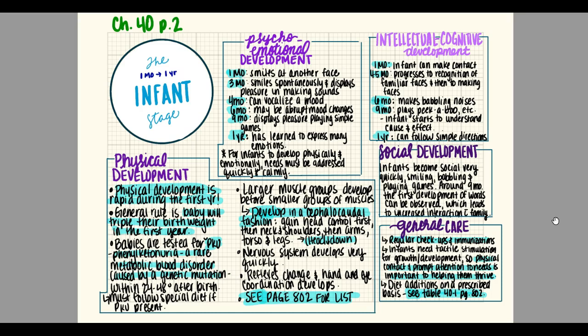The next phase is the infant stage, from one month up to one year — so this stage lasts 11 months. For this stage we add a psycho-emotional developmental factor. Babies at about one month old start to smile at another face. At about three months they smile spontaneously and display pleasure in making sounds — they start to coo and smile. At four months they can vocalize a mood. At six months they may start to exhibit abrupt mood changes. At nine months they display pleasure by playing simple games. By about a year, they've learned to express many of their emotions.